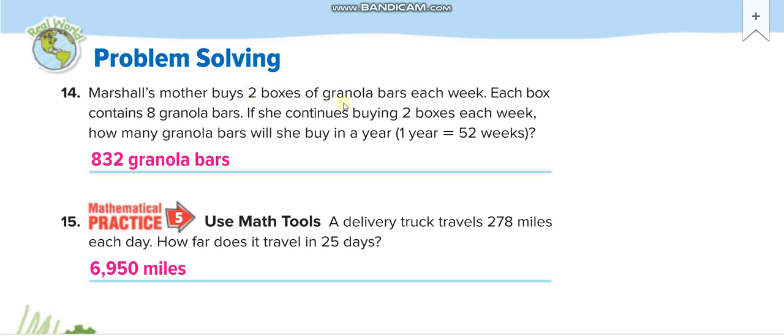And every week she is buying two boxes. It means she is buying sixteen granola bars every week. So how many granola bars will she buy in one year? One year is equal to 52 weeks. If she is buying 16 granola bars every week, so 52 times 16, you multiply it here. 52 times 16.